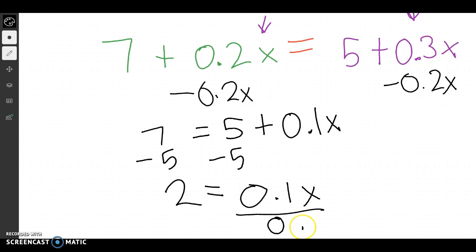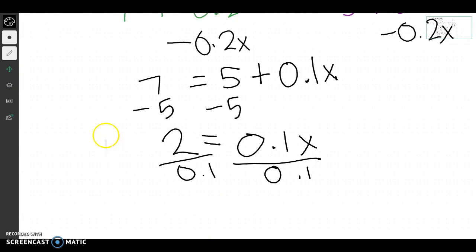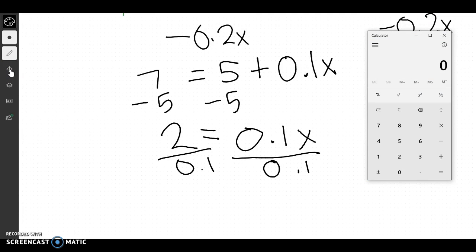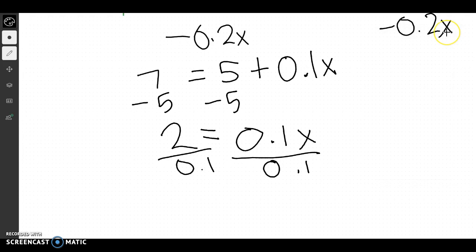Then we'll divide by .1. Divide by .1. Move that down. Now, if you can't do this in your head, that's fine. You just pull out a calculator and divide it by .1. And we can see that if that equals 20. So close that out. We'll see that x equals 20.